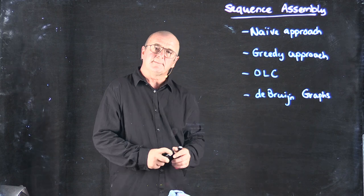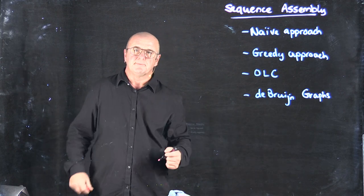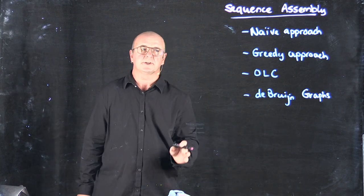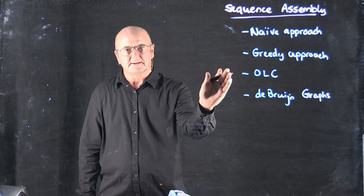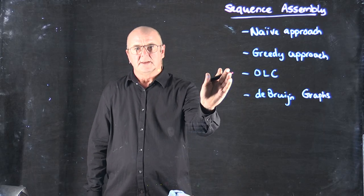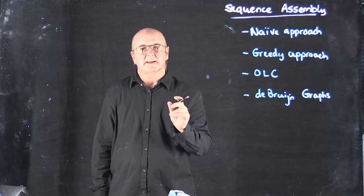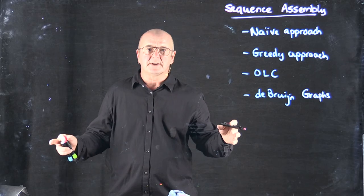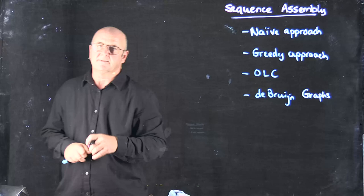So the last approach that I want to talk about is the de Bruijn graph approach. In a de Bruijn graph approach, unlike the overlap layout consensus that I just talked about, the de Bruijn graph approach takes k-mers out of reads and then tries to build an assembly absent that information.